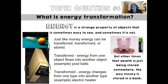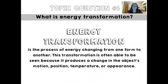Other times energy is just stored — like money stored in a bank, you can have a lot of potential energy stored somewhere, like in a battery. Energy transformation is the process of energy changing from one form to another. This transformation is often visible because it produces a change in the object's motion, position, temperature, or appearance.